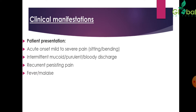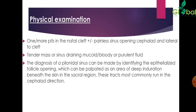Clinical manifestations — Patient presentation: acute onset of mild to severe pain, intermittent mucoid, purulent, or bloody discharge, recurrent or persisting pain, fever, and malaise. Physical examination findings include one or more pits in the natal cleft, painless sinus opening cephalad and lateral to the cleft, and a tender mass or sinus draining mucoid, bloody, or purulent fluid. Diagnosis is made by identifying the epithelialized follicle opening, palpated as an area of deep induration beneath the skin in the sacral region. These tracts most commonly run in the cephalad direction.